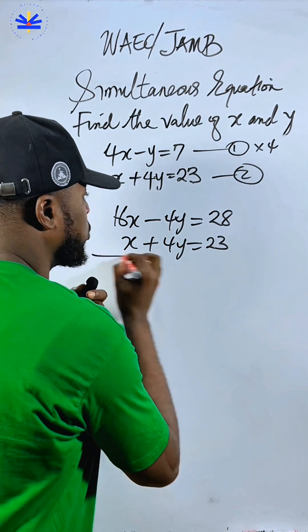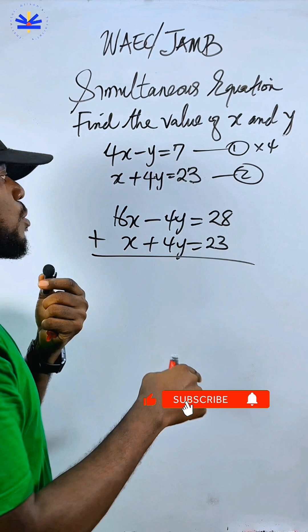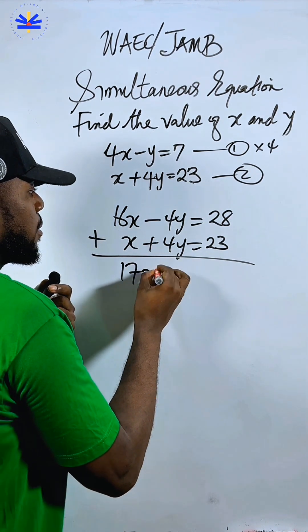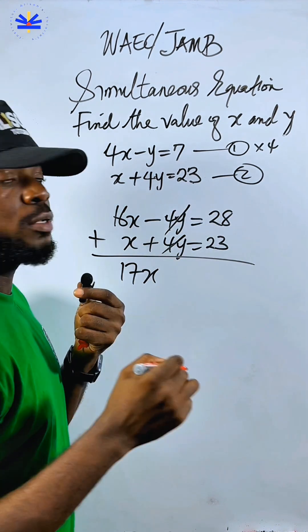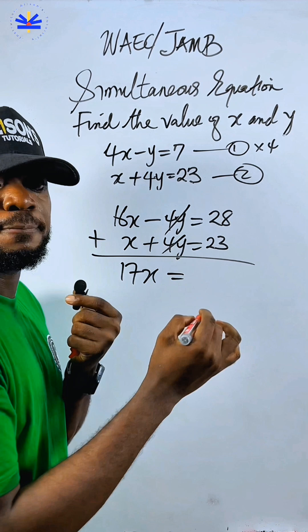Come draw this line. Elimination method. Add equation one and equation two. So now, 16x plus this one will give us 17x. Minus 4y plus 4y will give us zero. 28 plus 23 will give you 51.